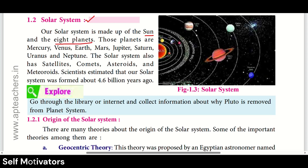Our solar system is located in the Milky Way galaxy. Our solar system is made up of the sun and eight planets. The eight planets are Mercury, Venus, Earth, Mars, Jupiter, Saturn, Uranus, and Neptune.